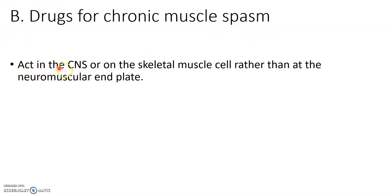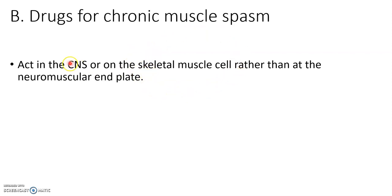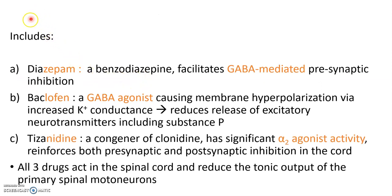Drugs for chronic muscle spasm act in the central nervous system or on the skeletal muscle cell, rather than at the neuromuscular endplate. These drugs act directly on the skeletal muscle cell. They include diazepam, baclofen, and tizanidine.